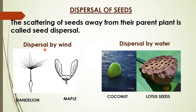The first method is dispersal by wind. Some seeds, such as those of cotton, madar, dandelion, and maple, have hair that helps them float in air, so they are carried by wind.